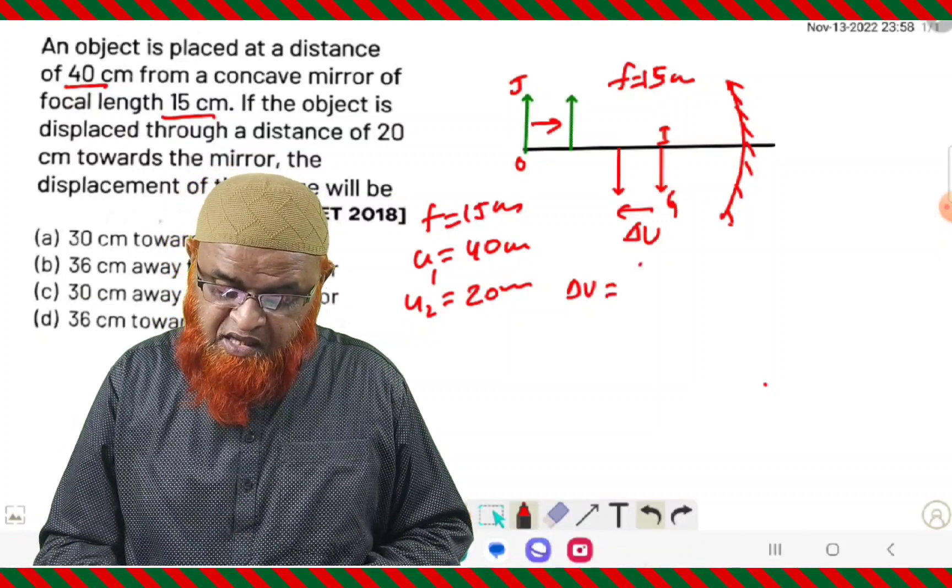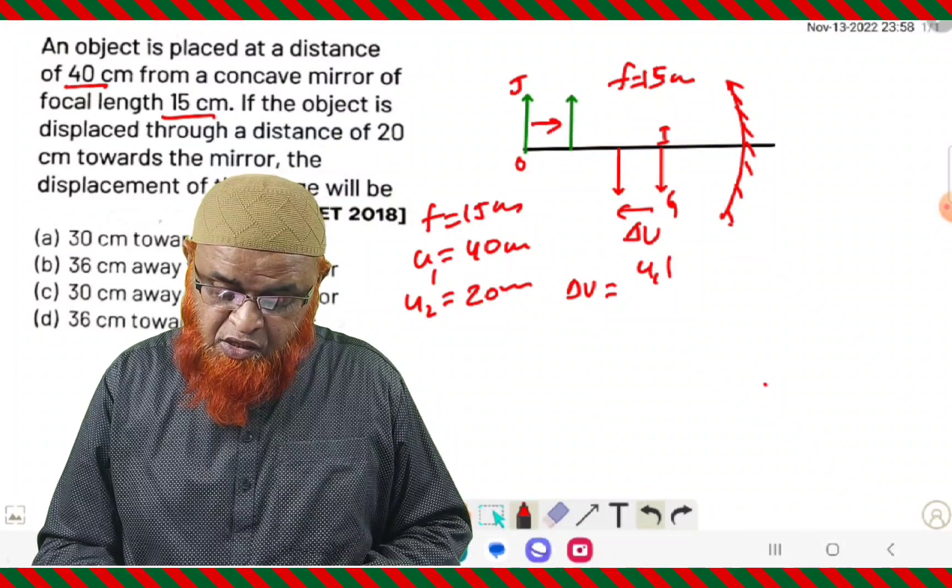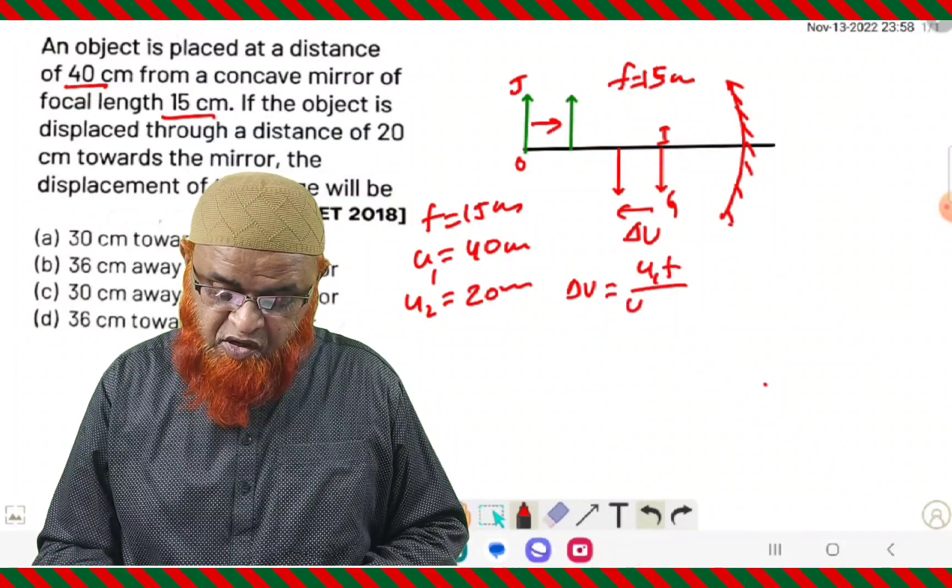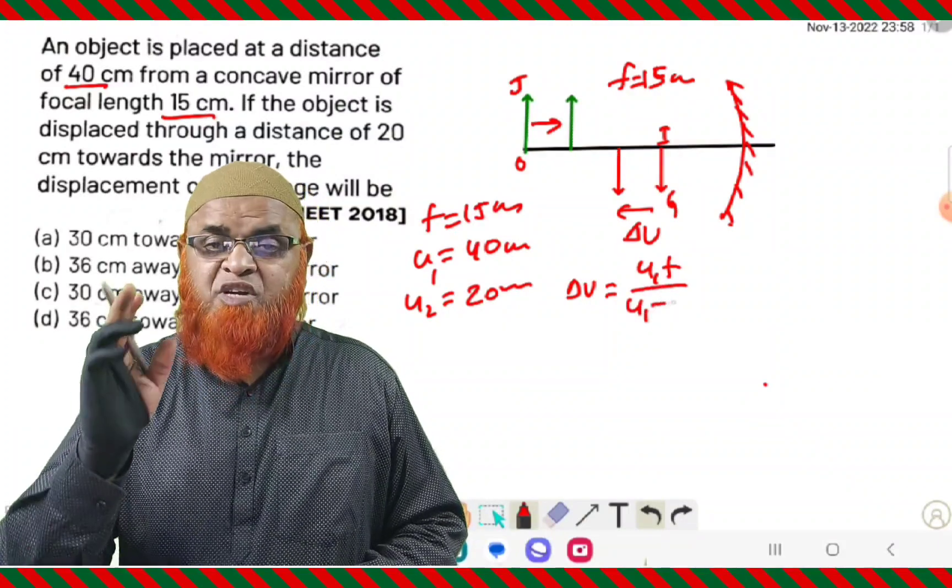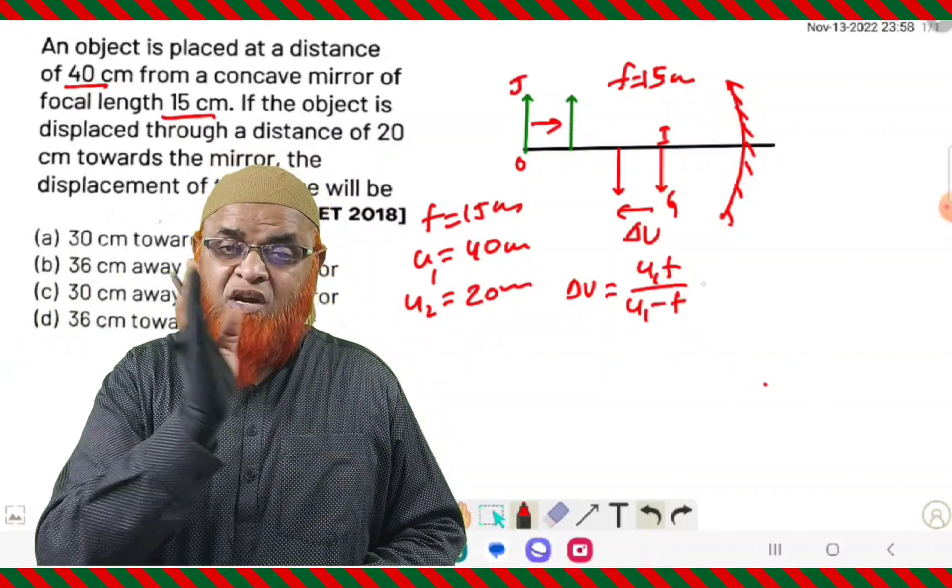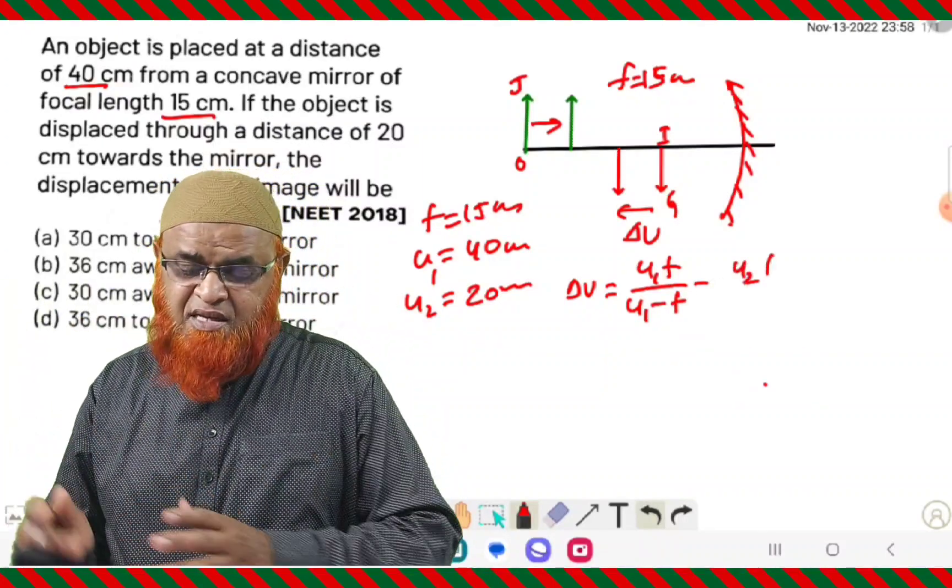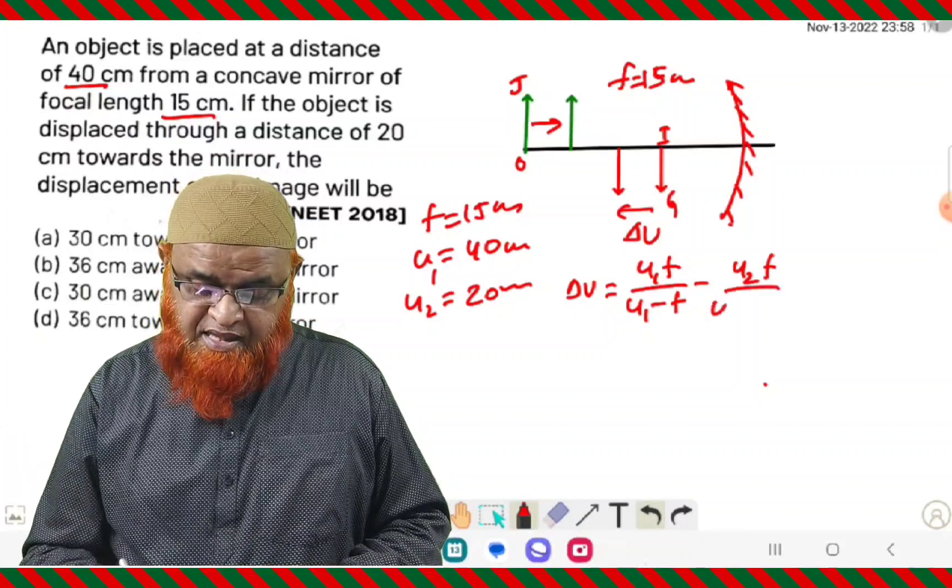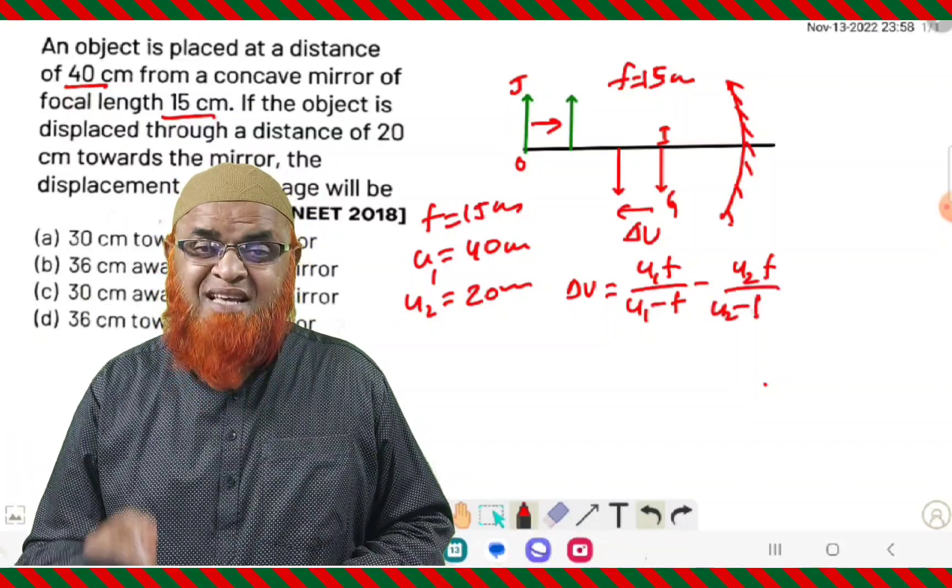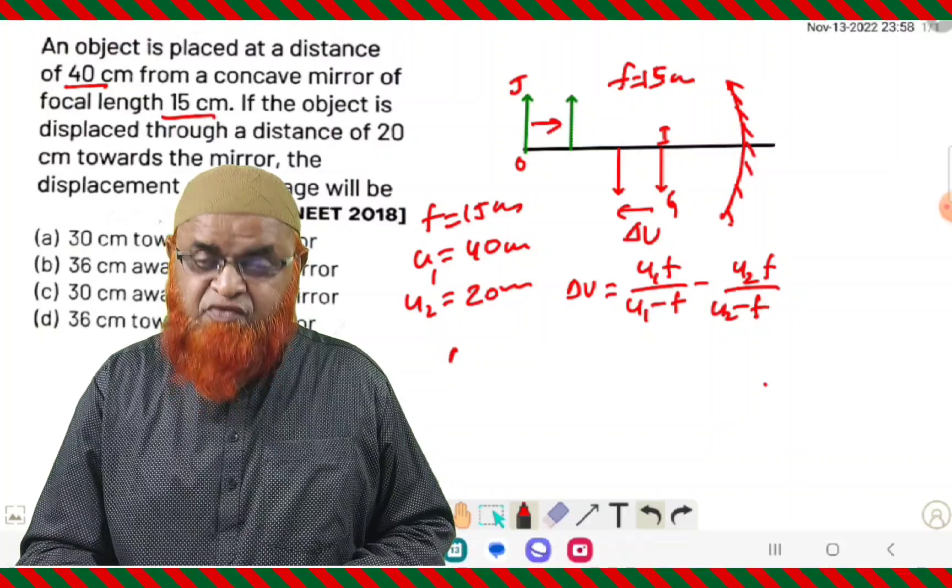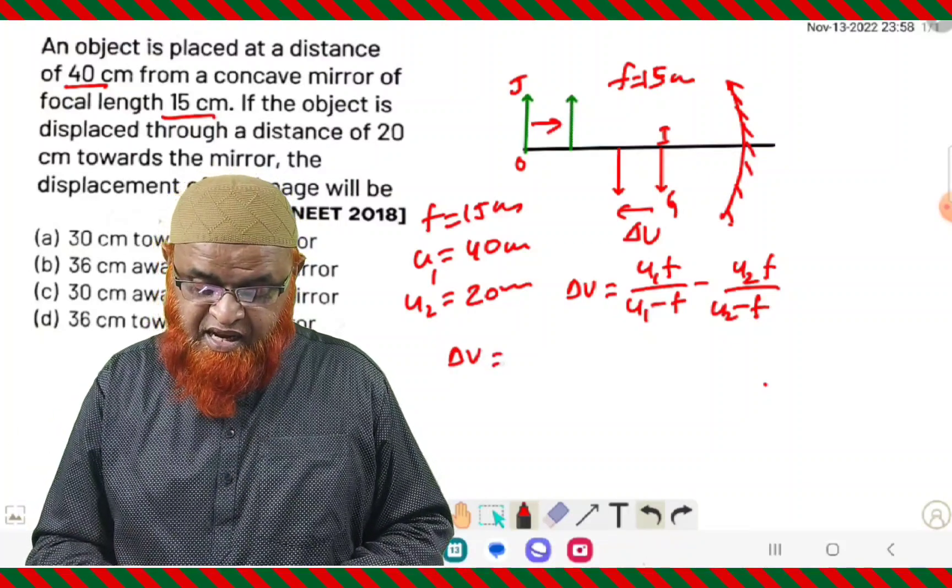For example, if focal length is given as 15 centimeters, U is taken as 40 centimeters. This is taken as U1 because the object is placed at a distance of 40 centimeters. After that, the object is shifted to 20 centimeters towards the mirror. Then U2, that is the second object distance when it is shifted towards the mirror, is taken as 20 centimeters.